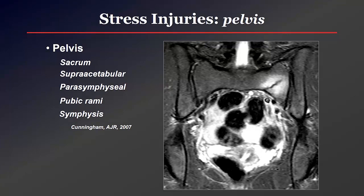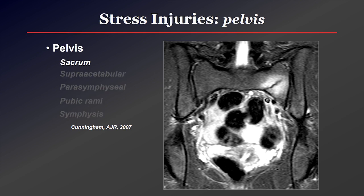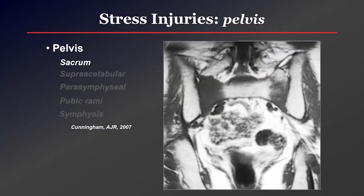Moving to specific sites — it's very important to know where these things occur, because there are usually very reproducible areas for stress injuries, and if you know where to look you have a much higher chance of finding these early. Beginning in the sacrum, these tend to affect the sacral ala. In this 23-year-old runner, you see prominent edema in the left sacral ala with an oblique fracture line. In another patient, a vertical orientation of abnormal signal within the sacral ala suggests a stress reaction. This patient underwent radiation therapy and now has extremely fatty marrow, which is a risk factor for developing insufficiency fractures within the pelvis.